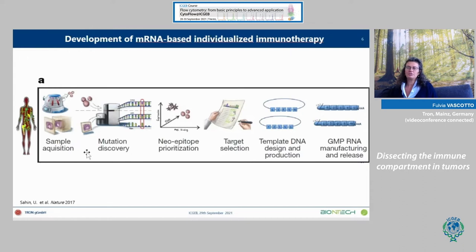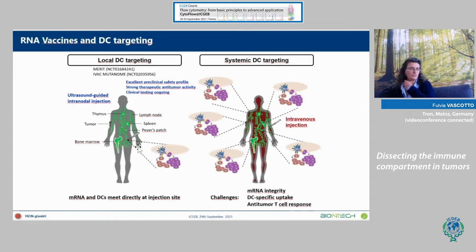This is the schematic representation: the aim is to produce GMP-grade mRNA to treat cancer patients. For delivery, the first approach was intranodal injection for early clinical trials in melanoma patients. However, ultrasound-guided intranodal injection was really laborious, so we developed a systemic delivery approach — injecting intravenously in patients — where the mRNA is protected by specific lipids.